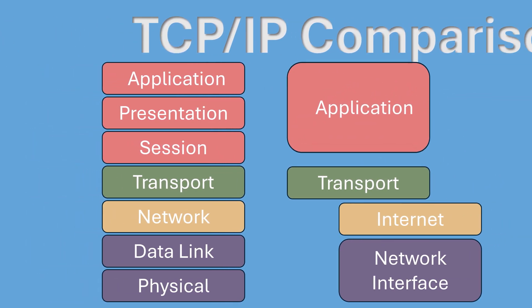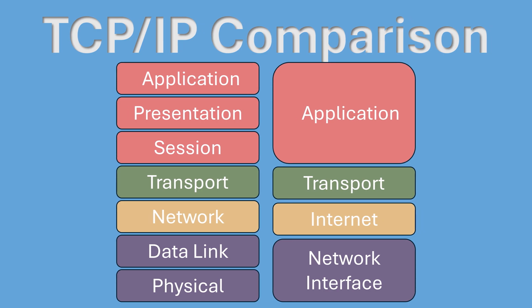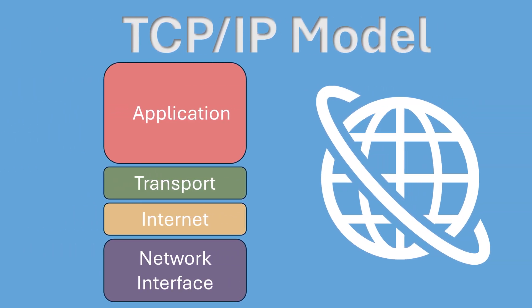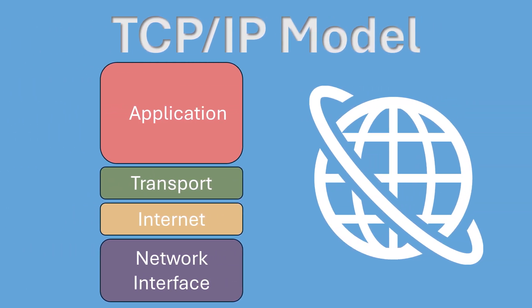While the OSI model is great for understanding networks, we don't actually use it in the modern world — we use what is called the TCP/IP model. The TCP/IP model is simpler, with only four layers: the application layer, which combines the top three layers of the OSI model; the transport layer, which remains the same; the internet layer, which is similar to the network layer; and the network interface layer, which combines the bottom two layers. The TCP/IP model was developed alongside the internet, making it more practical. The OSI model is theoretical, while the TCP/IP model is the actual protocol suite used in internet communications today.